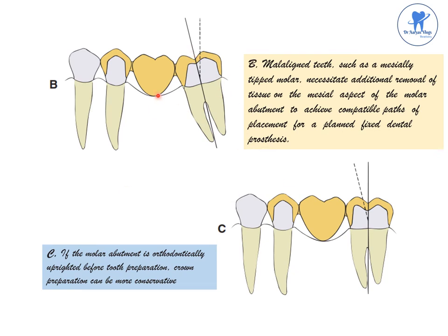This picture shows malaligned teeth — a mesially tipped molar necessitates additional removal of tissue on the mesial aspect of the molar abutment to achieve a compatible path of placement. If the molar abutment is orthodontically uprighted before tooth preparation, the crown preparation can be more conservative with less tooth structure removed.